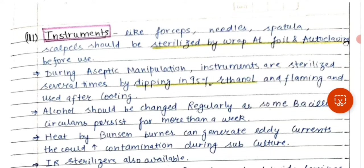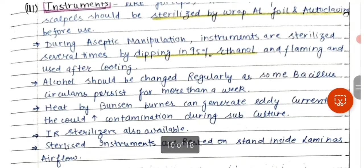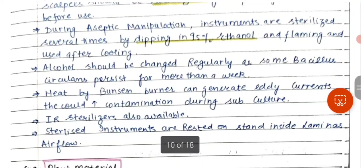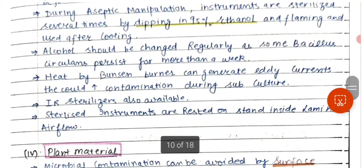Instruments should be sterilized by wrapping with aluminum foil and autoclaving before use. During aseptic manipulation, instruments are sterilized several times by dipping in 95 percent ethanol and flaming, then used after cooling. Alcohol should be changed regularly, as some Bacillus bacteria persist for more than a week. Heat from a Bunsen burner can generate eddy currents that increase contamination during subculture.